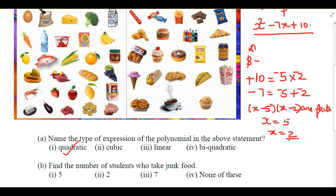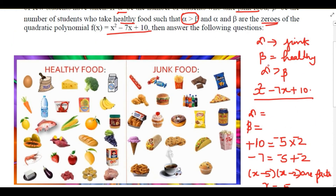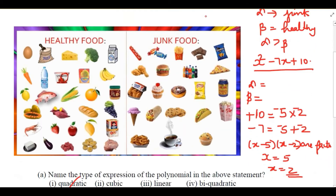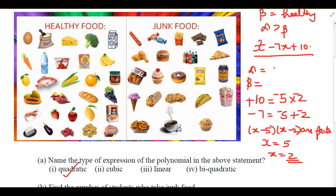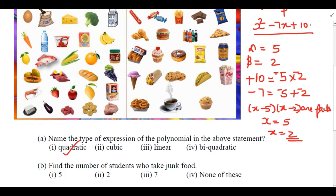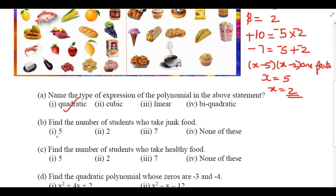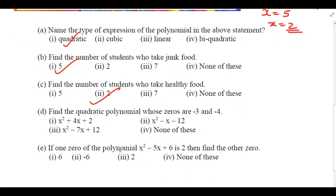Hence the zeros are x = 5 and x = 2. Now, since alpha is greater than beta, alpha takes the value 5 and beta takes the value 2. Alpha is the number of students who have taken junk food, so the answer is 5. Beta is the number of students who have taken healthy food, so the answer is 2.